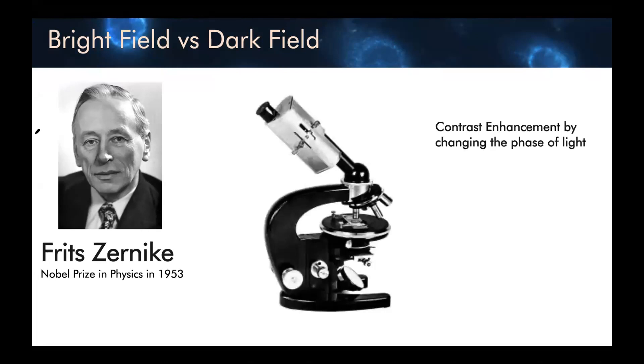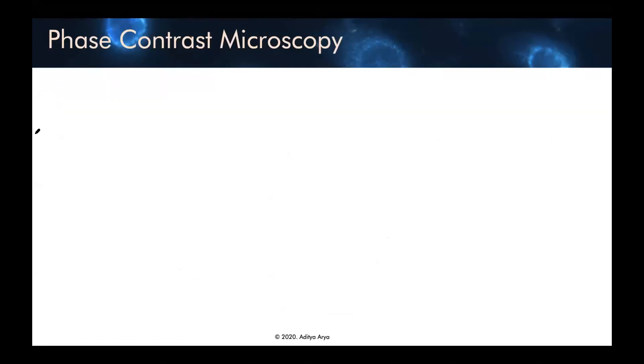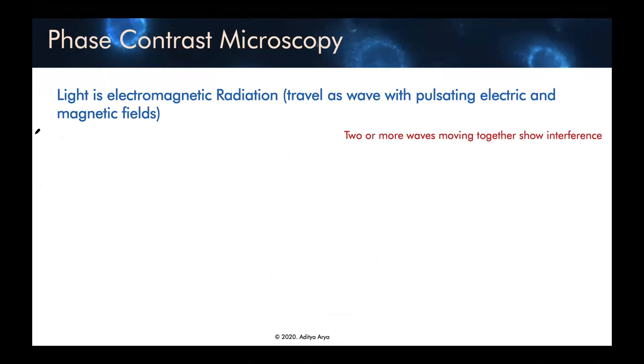And he invented a new method to enhance the contrast by changing phase of light. That was an interesting idea. Let's look into how changing the phase of light can help in creating the contrast. So for understanding that, we should go back to a fact that light is electromagnetic radiation, and it travels as a pulsating wave in the form of electric and magnetic field, which are perpendicular to each other.